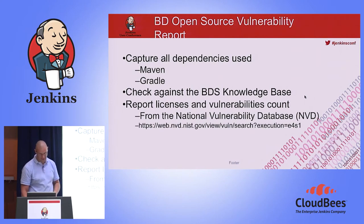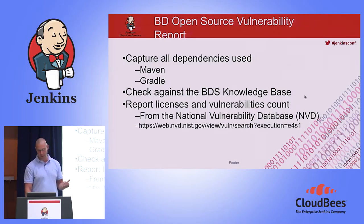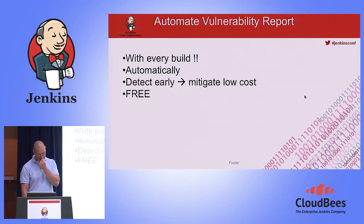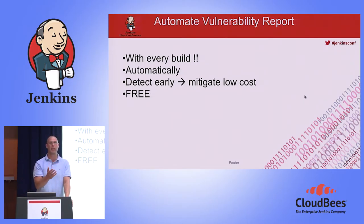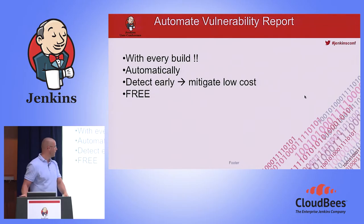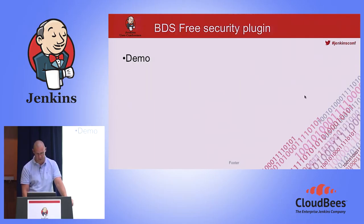We generate vulnerability reports based upon the findings from the open source we find for you. What we actually do is generate a report — what we call a bill of materials — which is a list of all open source components found during the scanning of your source code. The good news, especially for me from the Netherlands: it's free.